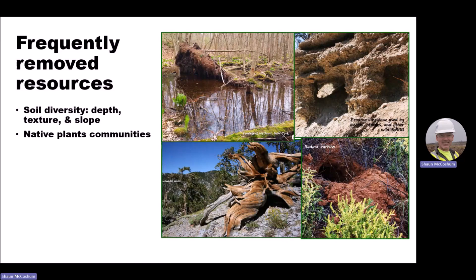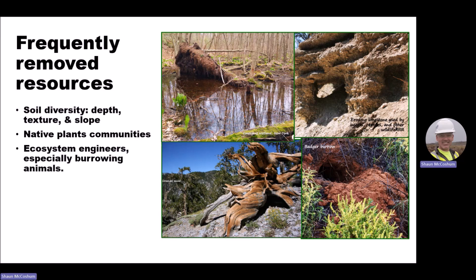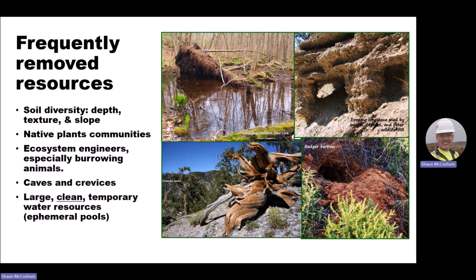Within our designs and urban landscapes there are also a lot of natural resources that wildlife need that we remove simply because we think it's a threat to human safety — and in most cases it is not. This includes soil diversity, depth, texture and slope; native plant communities are typically removed and replaced with horticultural plants; ecosystem engineers especially burrowing animals are extirpated from our urban environments; caves and crevices are often filled in; large clean temporary water resources are often polluted or filled in because of concern about mosquitoes; and we typically remove wood and woody materials and leaf litter because many people see it as unsightly.